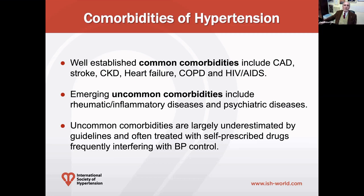On the other side, most important are probably the emerging uncommon comorbidities, which include mainly the rheumatic or chronic inflammatory diseases and the psychiatric diseases. Uncommon comorbidities are usually underestimated in the general evaluation of the hypertensive patient, underestimated by available guidelines, and often they are treated with self-prescribed drugs that frequently interfere with the hypertensive treatment.